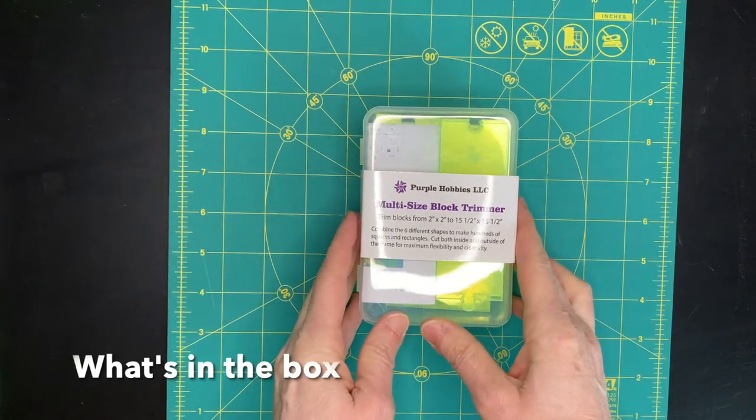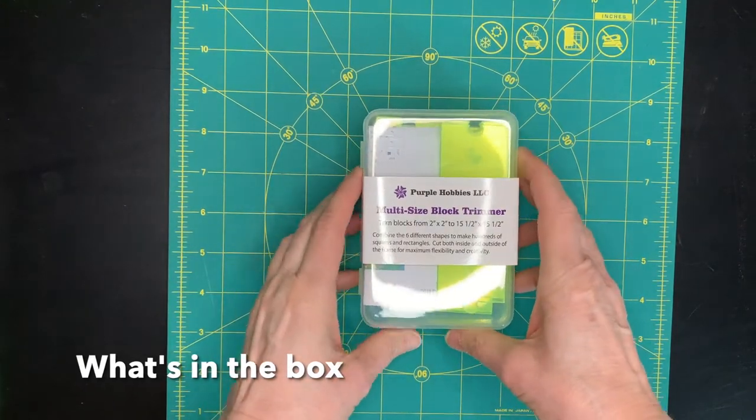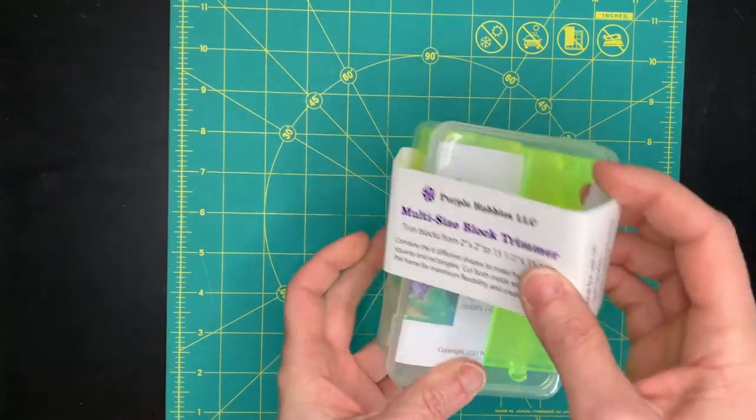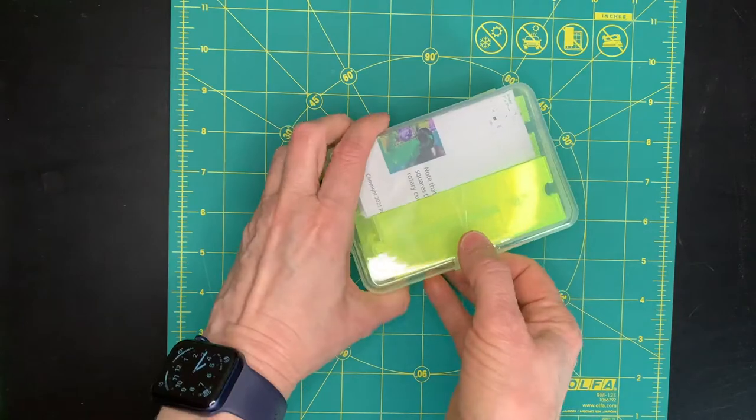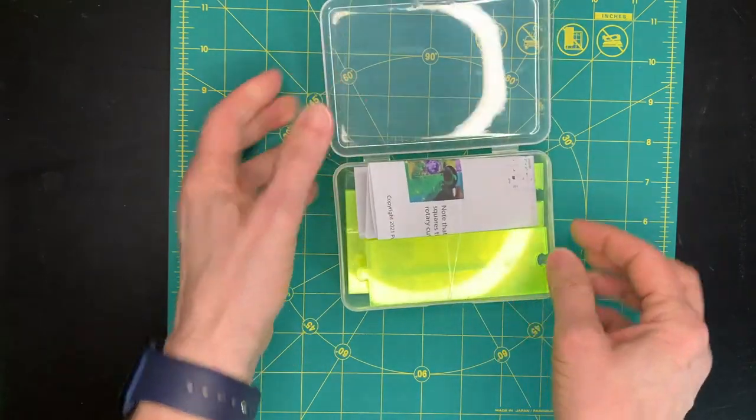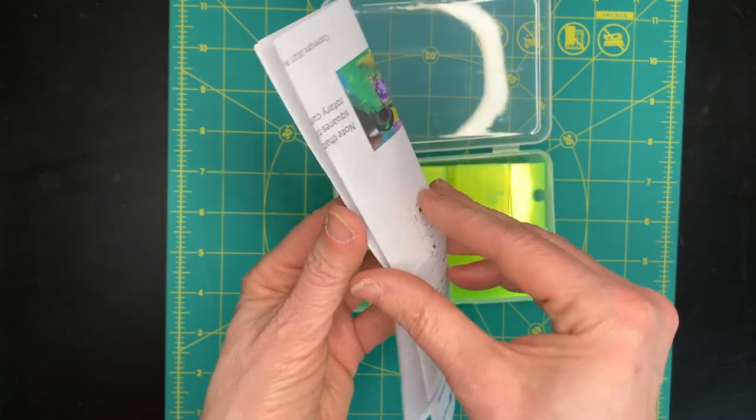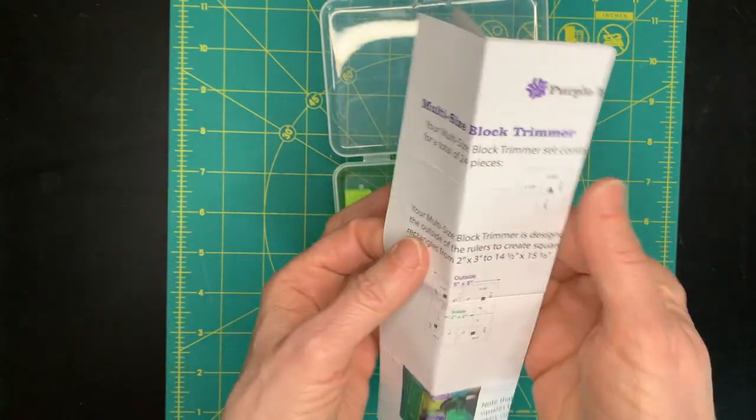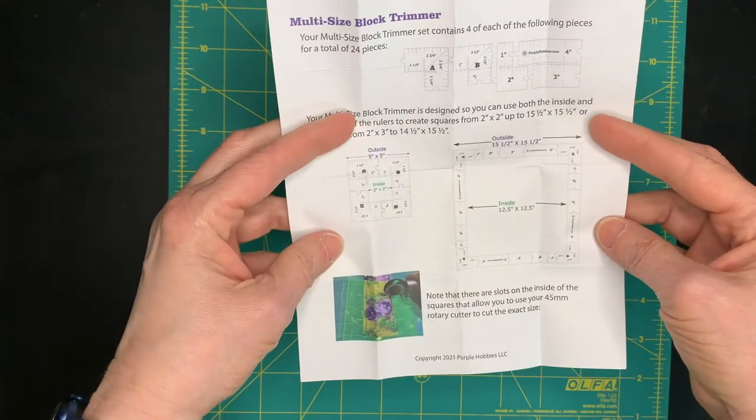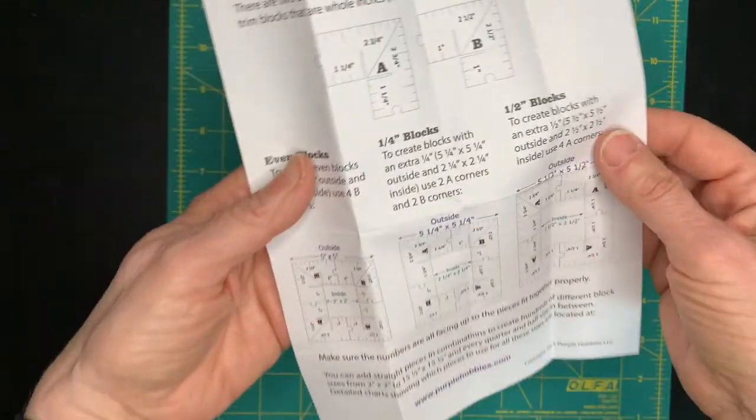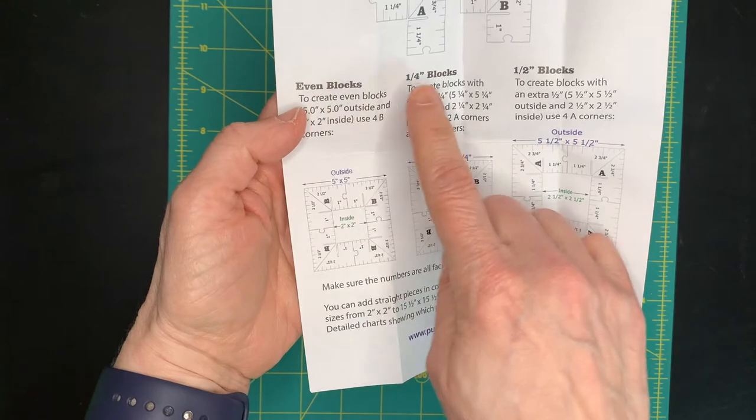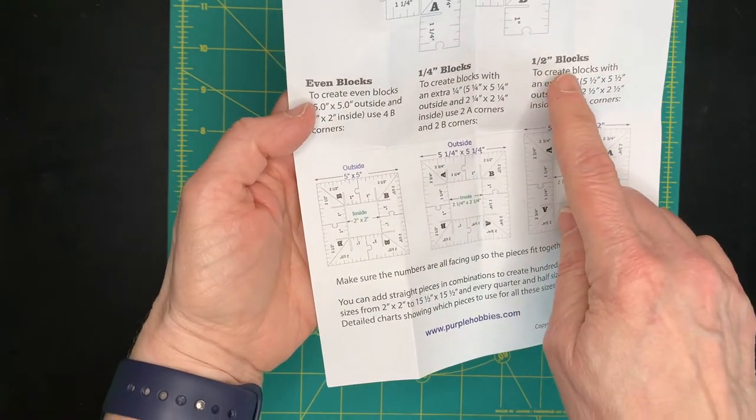Inside this package there are 24 interlocking pieces that you can use to make hundreds of block trimmers. Let me just open it up real quick for you. It comes in a reusable plastic case and it has a brief set of instructions. There are much more detailed instructions available on the website, but you have everything you need to know to get started with making even blocks, quarter inch blocks, or half inch blocks.